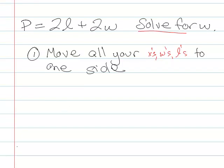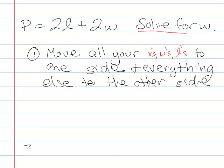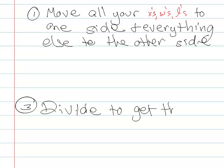And I'm going to leave a space. And then your last step is going to be to one side and everything else to the other. And then we'll have a little bit of space for my secret step. And step three is going to be to divide to get the x, l, w, whatever, all by itself.